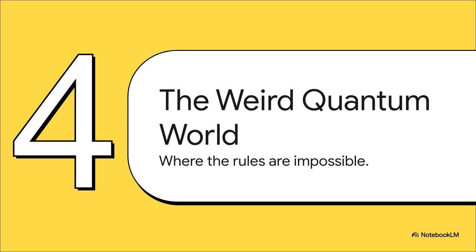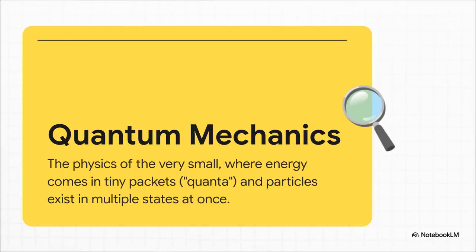You thought relativity was weird? Ha! Welcome to the quantum world. A place where the rules don't just seem weird. They seem completely impossible. So down at the scale of tiny little things like atoms and electrons, reality just gets fuzzy. Energy isn't a smooth, flowing river. It comes in these tiny, discrete packets called quanta. And particles? They don't have one single location. They exist in this cloud of possibilities. They can be in multiple places at once, a state we call superposition.